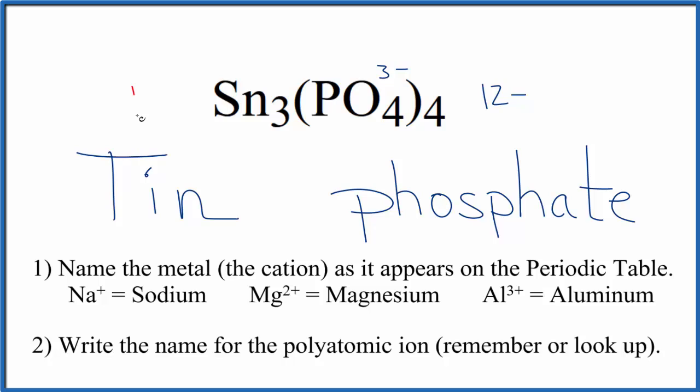That means we have to have a twelve plus over here for these to add up to zero, giving us a net charge of zero. So three times some number gives us twelve. Three times four would give us twelve. So we put Roman numeral IV with parentheses between the names.